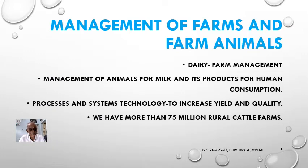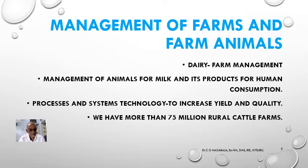Management of farm and farm animals is very important. Dairy and farm management helps us produce good yielding animals and good products. Management of animals for milk and its products for human consumption is the core activity in dairy. India has more than 75 million rural cattle farms which produce a large amount of milk.